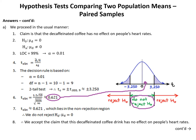Step 7: t obtained of 0.621 lies in the non-rejection region. Therefore, we do not reject H0 that muD equals 0. Step 8: therefore, we accept the claim that this decaffeinated coffee drink has no effect on people's heart rates.